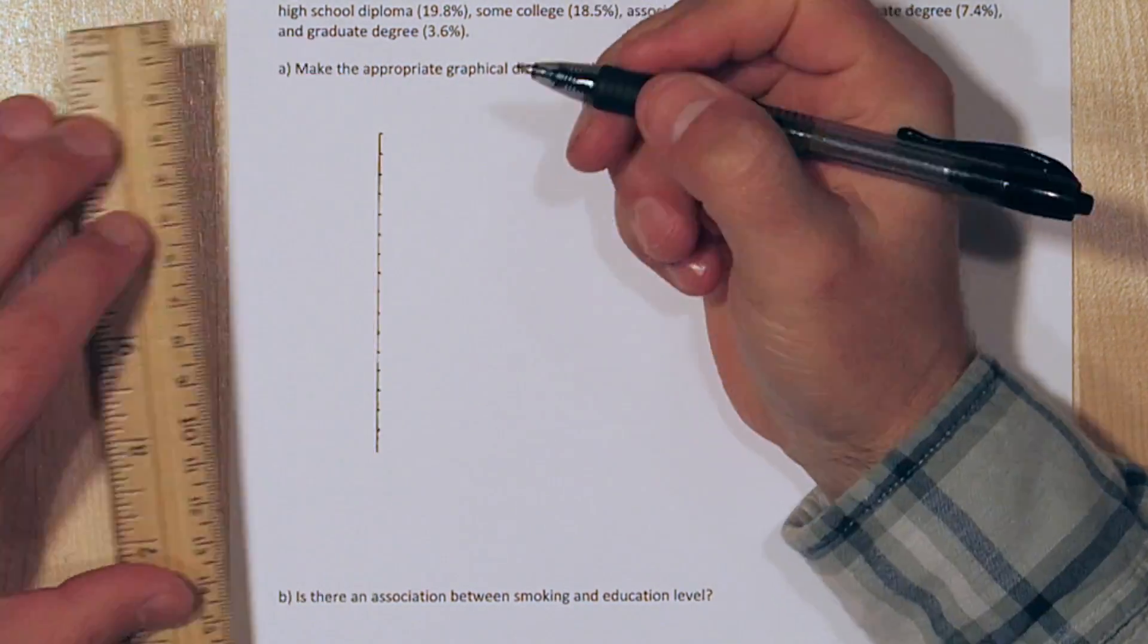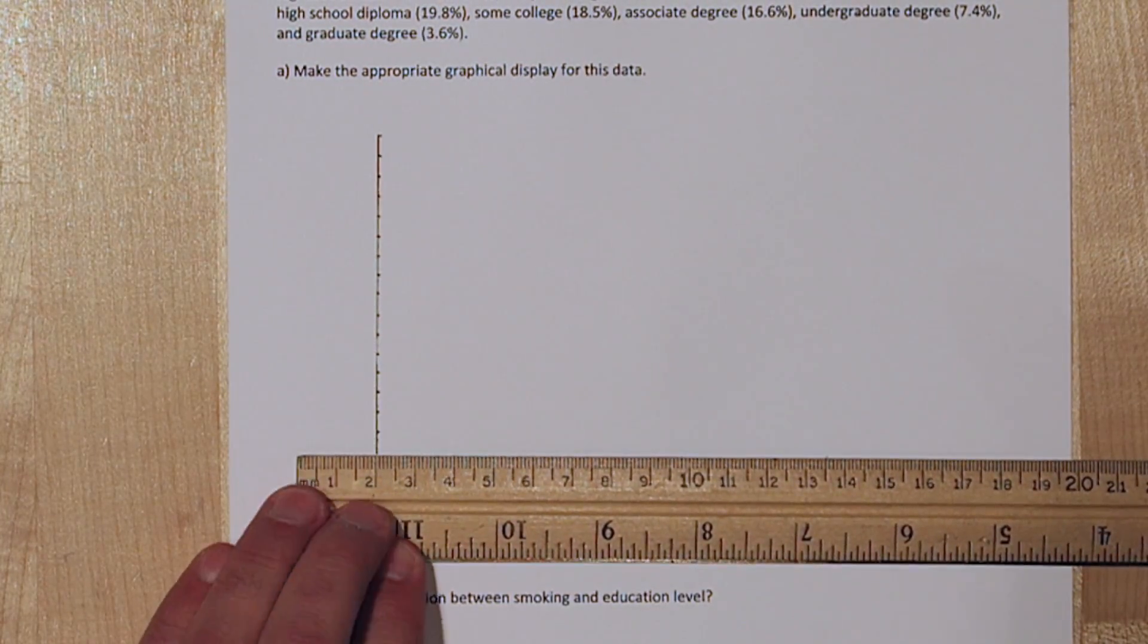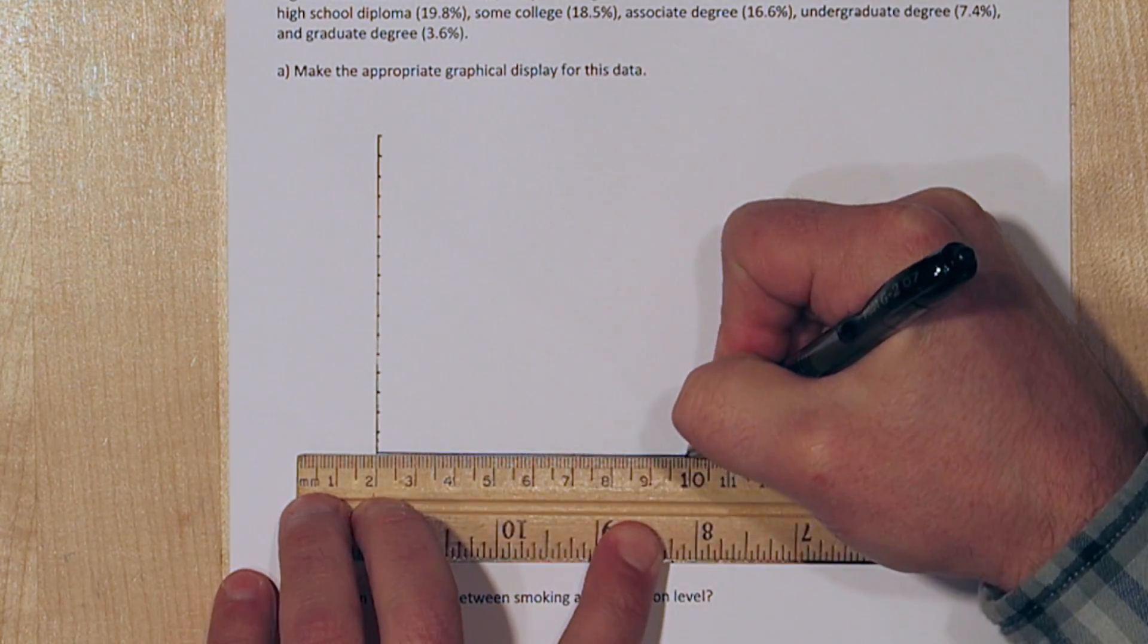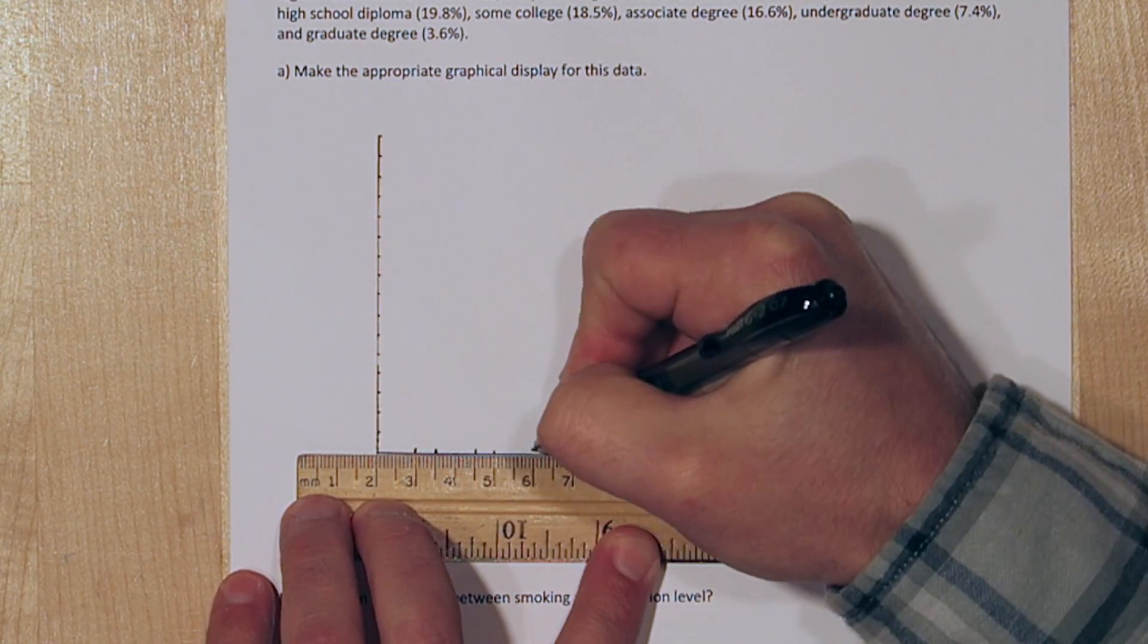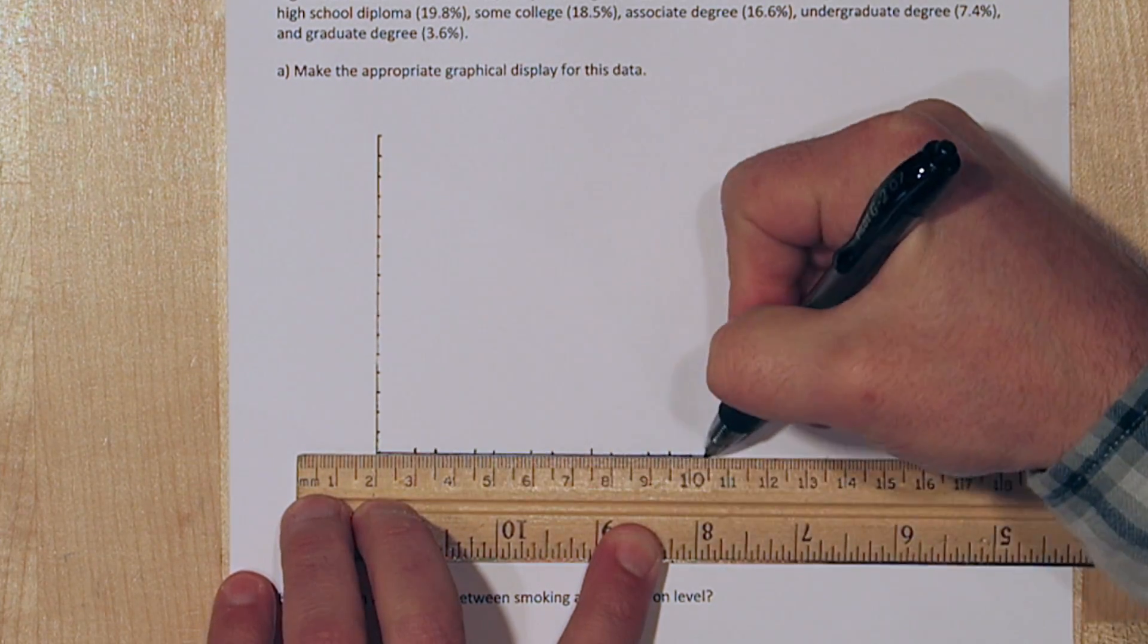Let's start by labeling the vertical axis. It looks like the highest percentage of current smokers is the no high school diploma at 24%, so we need to go at least that high.